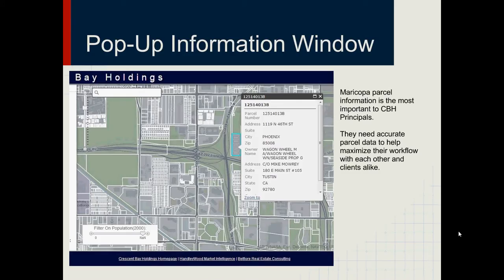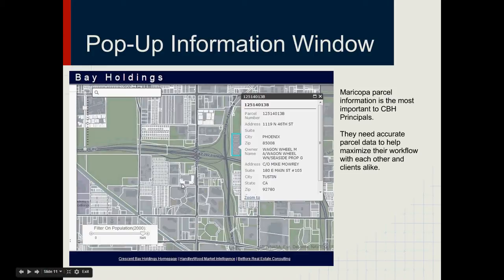Here's the information pop-up. The most important one — beyond state and county level — is the parcel level pop-up. Because the CBH principals need accurate parcel data to help their clients and each other. If they want to build on a site and they need to know who owns all the surrounding parcels, they can just click on them and figure out who owns them. If they need to build a well or anything like that, they can find the parcel data and contact who they need to contact.